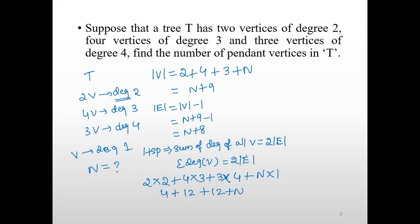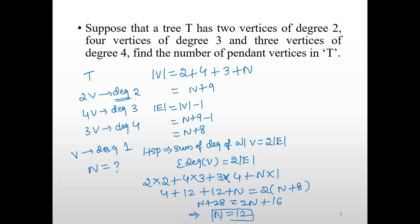This sum of degrees equals twice the number of edges, so we have: n + 28 = 2(n + 8), which gives n + 28 = 2n + 16. Further simplification gives n = 12.